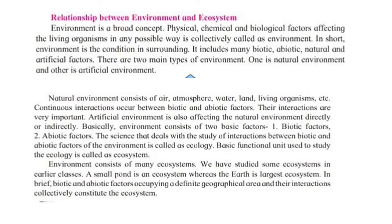There are two main types of environment: natural environment and artificial environment. Natural environment consists of air, atmosphere, water, land, living organisms, etc. Artificial environment also affects the natural environment directly or indirectly. Basically, environment consists of two basic factors: biotic factors and abiotic factors. The science that deals with the study of interaction between biotic and abiotic factors of the environment is called ecology. The basic functional unit used to study ecology is called an ecosystem.